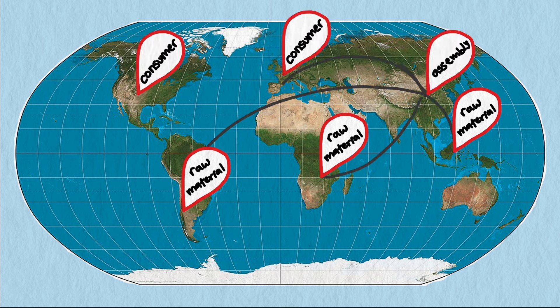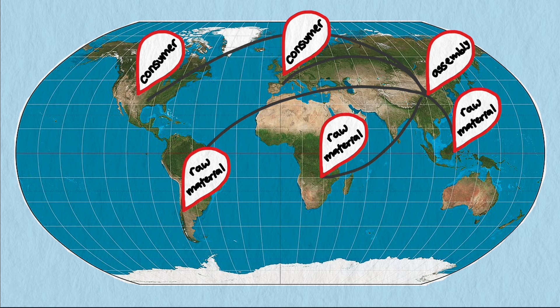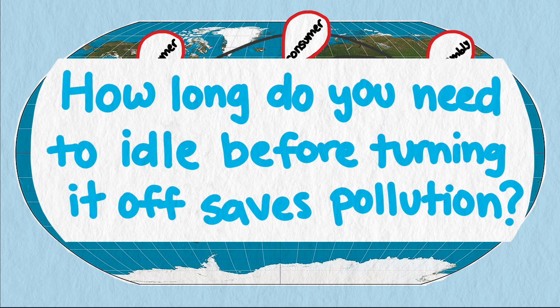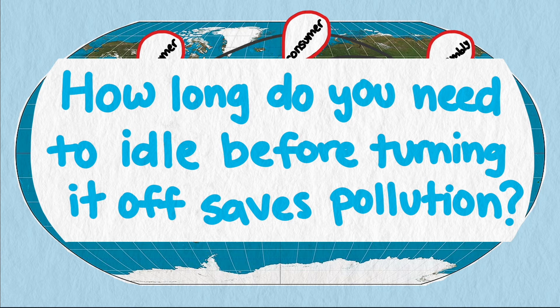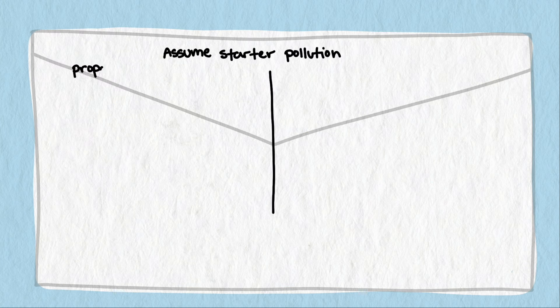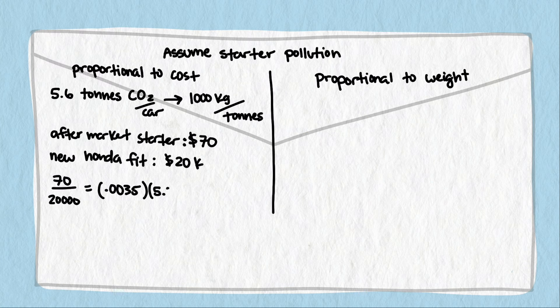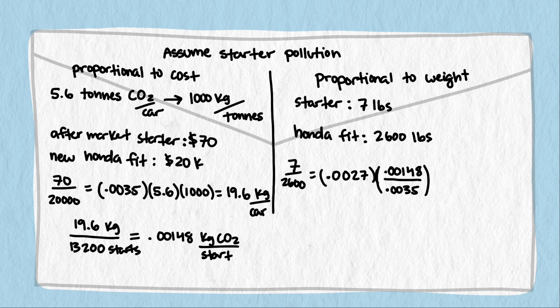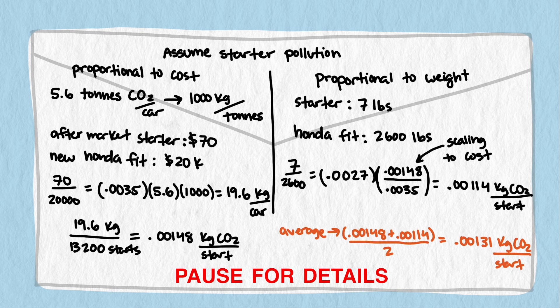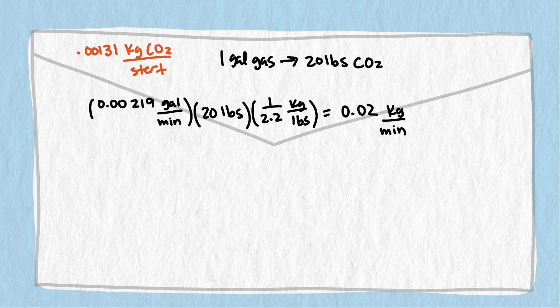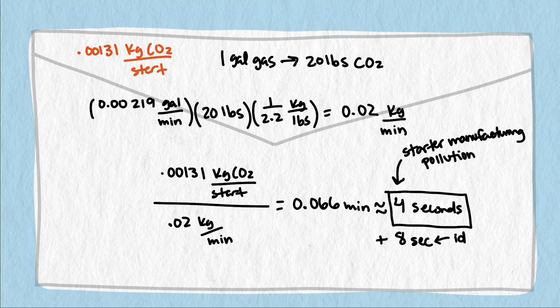So how long do you need to idle until turning it off actually cuts down on pollution? I did a back-of-the-envelope calculation for my Honda Fit. An estimated 12 seconds of idling to make up for pollution, 8 seconds to make up for the gas needed to start the engine again, and about 4 seconds to save on the pollution from creating a new starter.